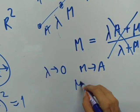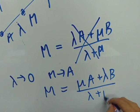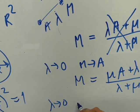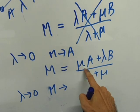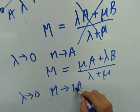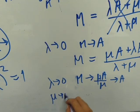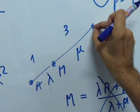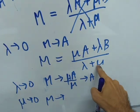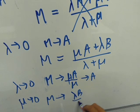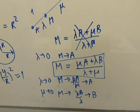So let's do it a different way. Let's try mu a plus lambda b over lambda plus mu. Now, what happens? Lambda goes to 0, M becomes mu a over mu, and that's a. And when mu goes to 0, point M should be on top of b. Mu goes to 0, I get lambda b over lambda, and yes, it's b. So this is the formula I want.